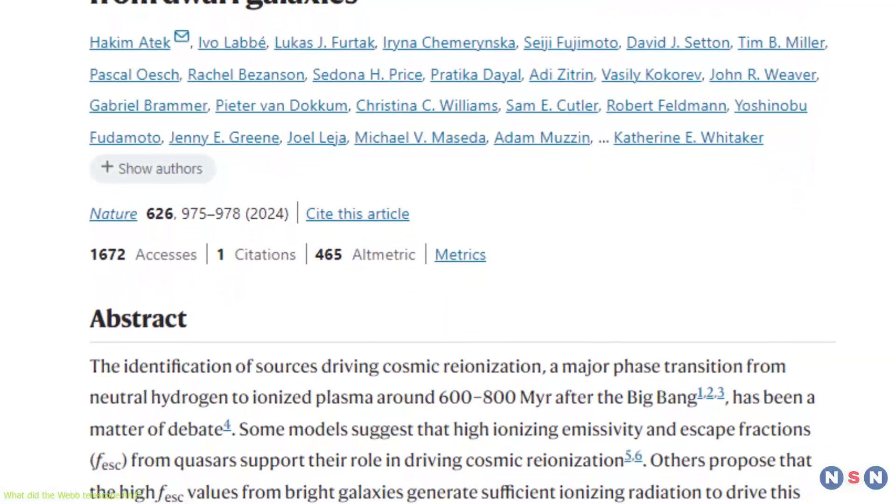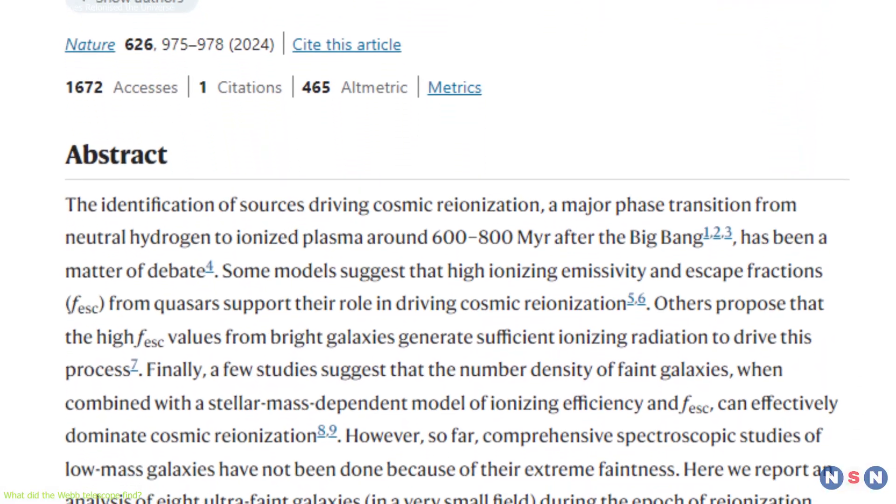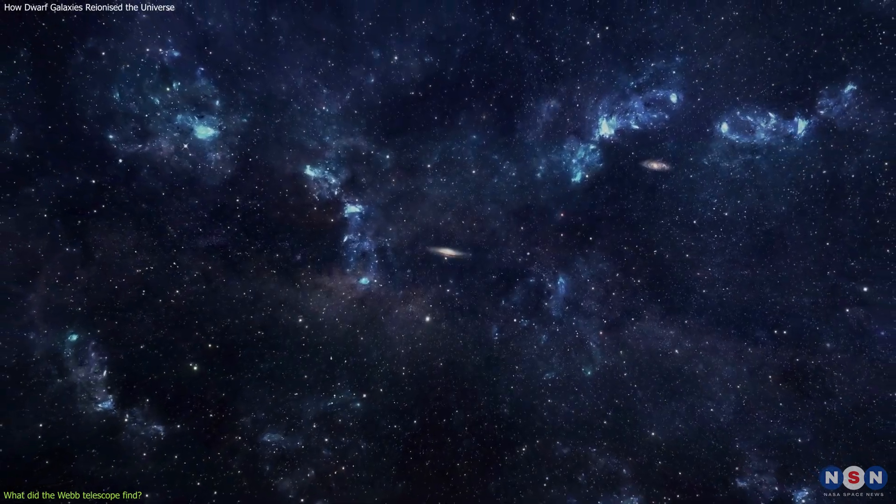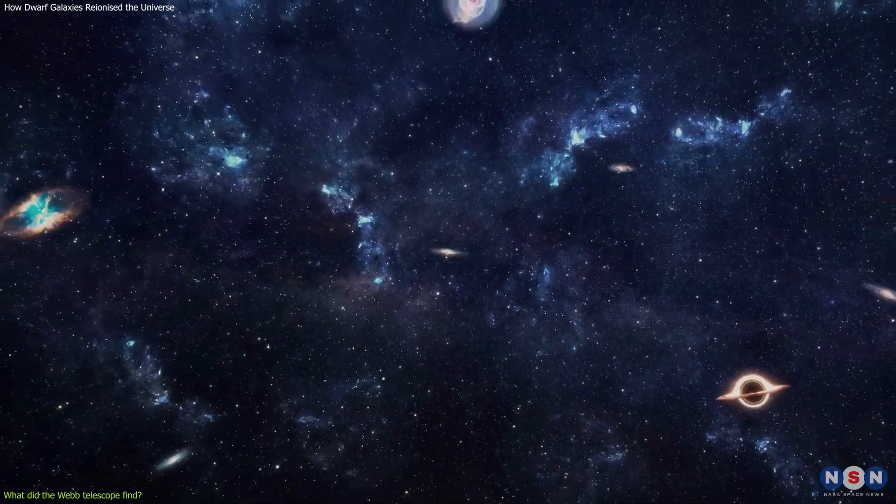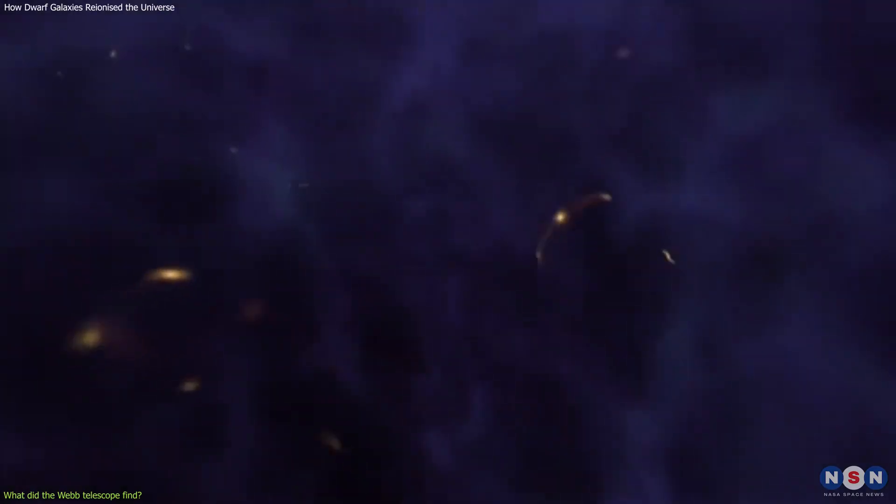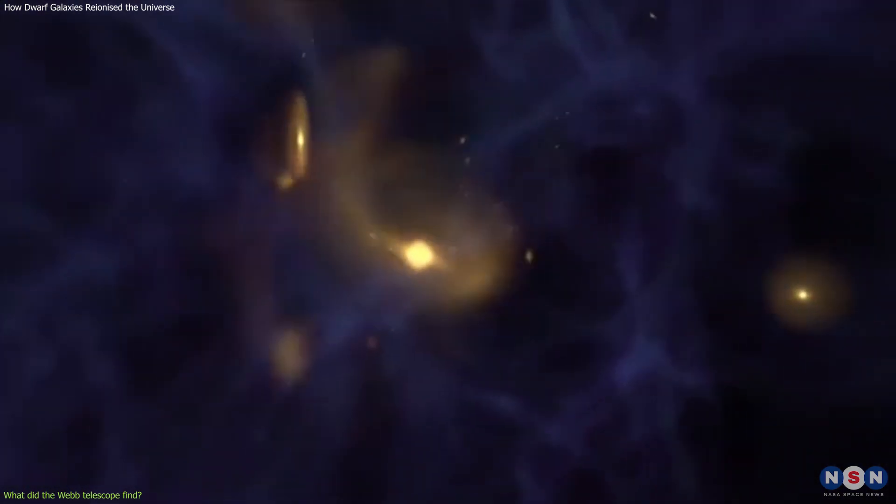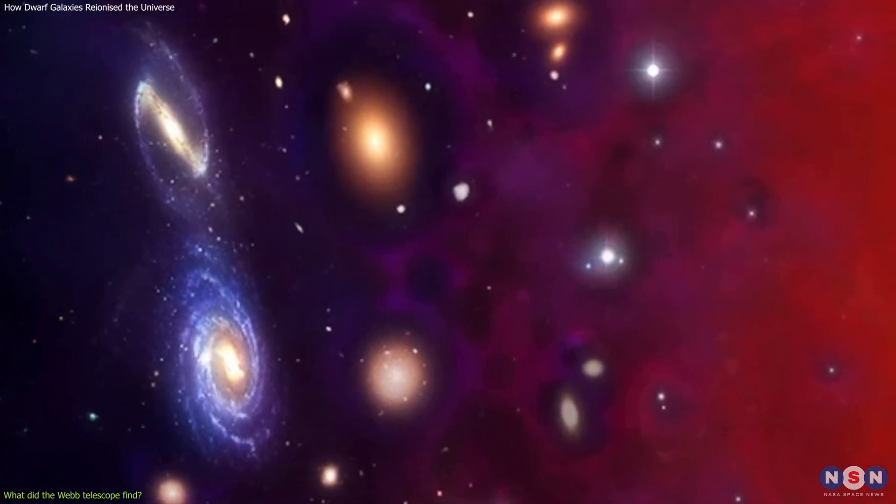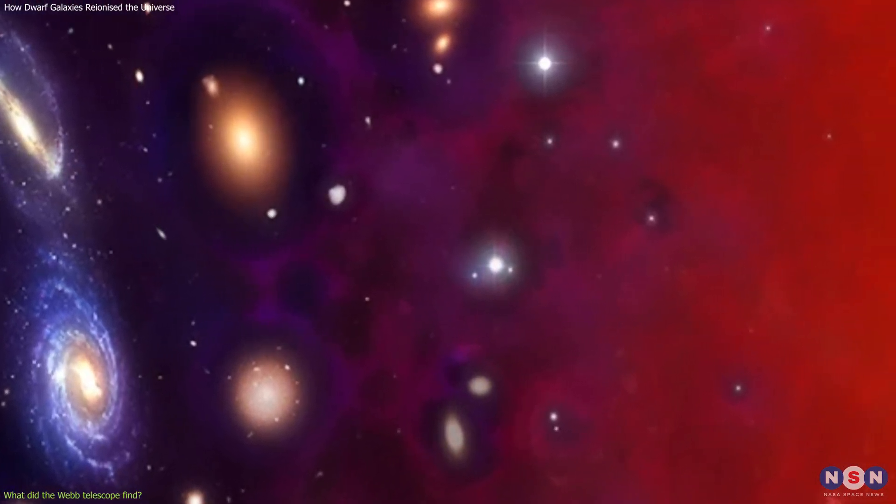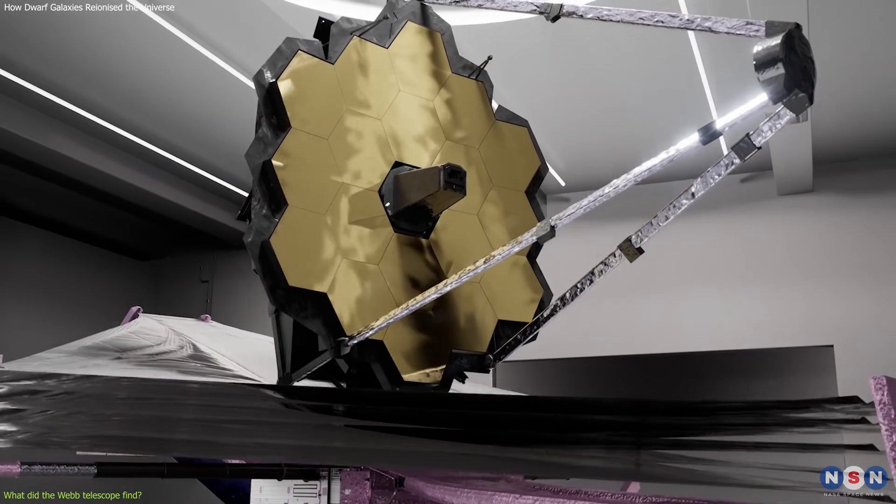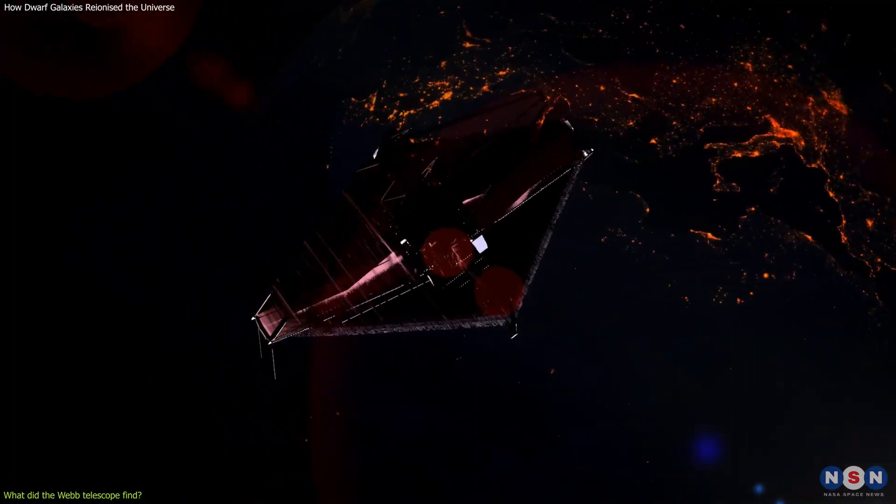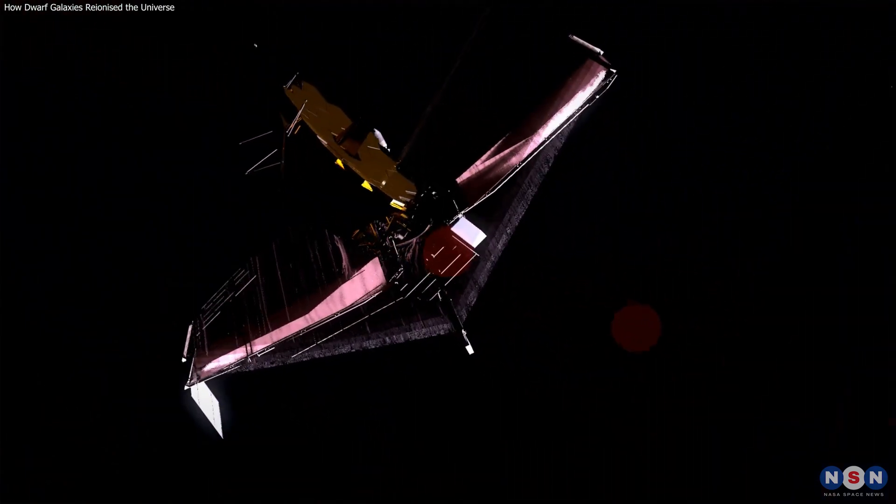However, this discovery is not the final word on the reionization process, as there are still many uncertainties and unknowns. For instance, how did these faint galaxies form and evolve? How did they interact with each other and with the surrounding environment? How did they affect the properties of the intergalactic medium and the cosmic web? These are some of the questions that the Webb Telescope and other future observatories will try to answer in the coming years.